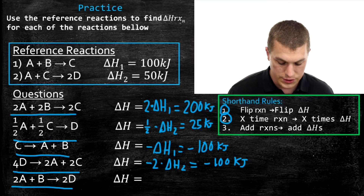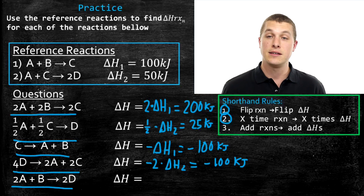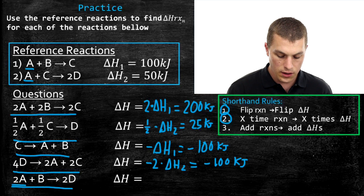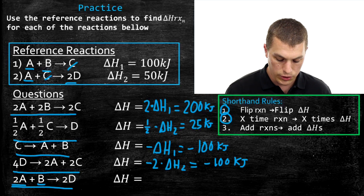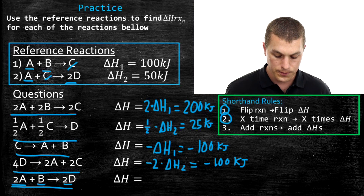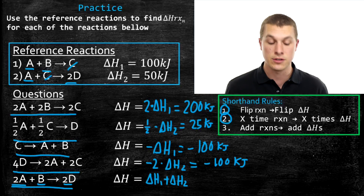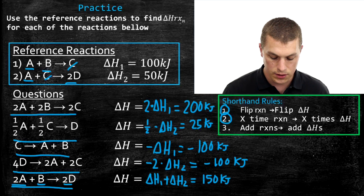The last example: 2A plus B goes to 2D. What we've done is added together reactions one and two. Adding the A's gives 2A; B remains; C appears on both reactant and product sides so it cancels out; and 2D is our product. So the answer is delta H1 plus delta H2 — that follows from rule three, adding the two reactions together and adding their enthalpies. 100 plus 50 gives us 150 kilojoules.